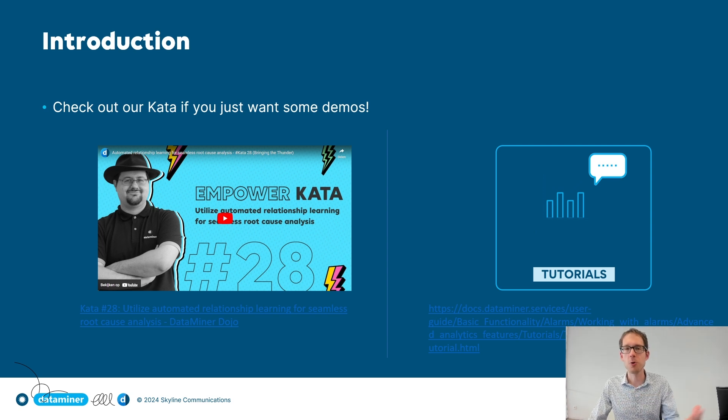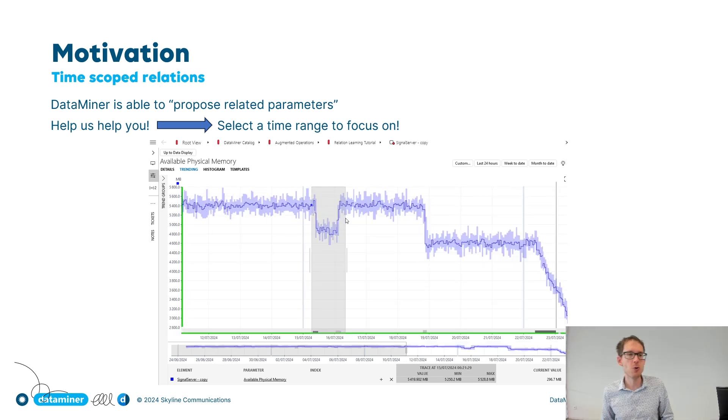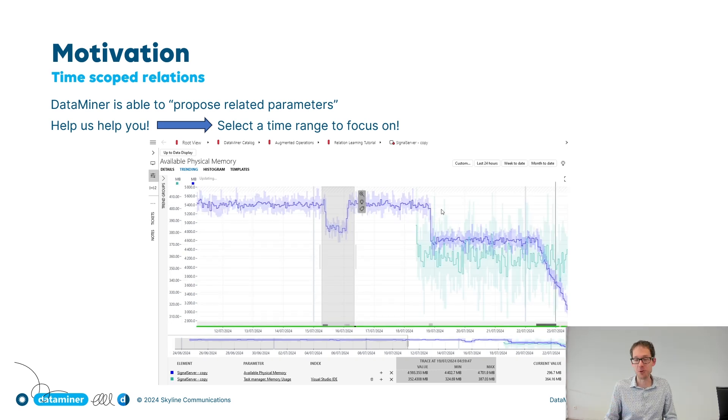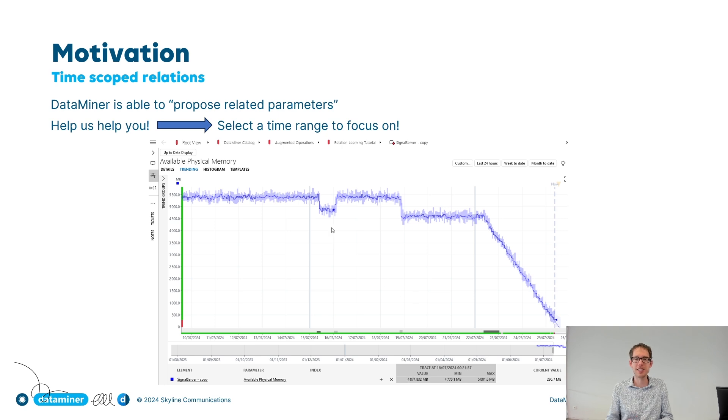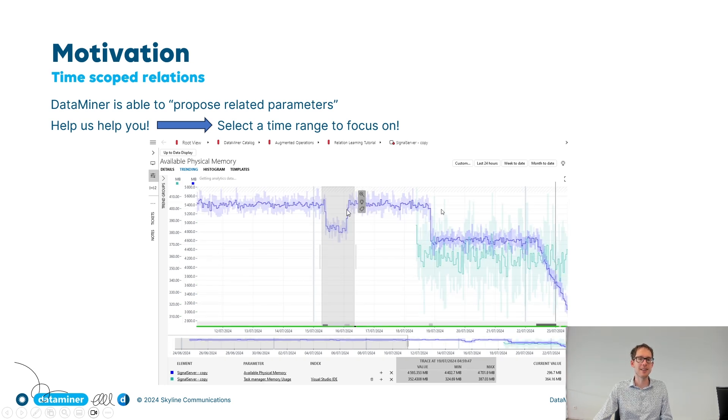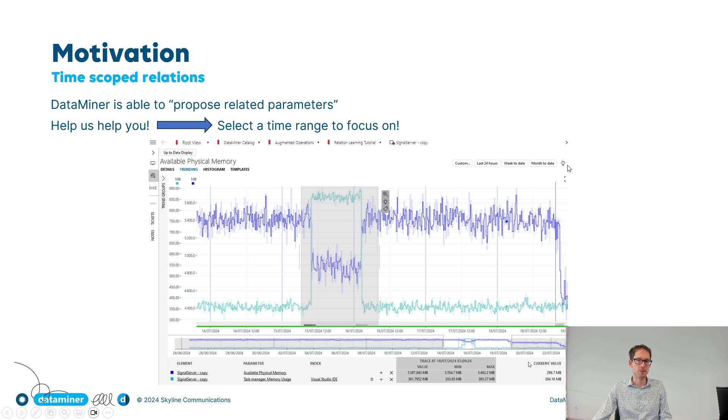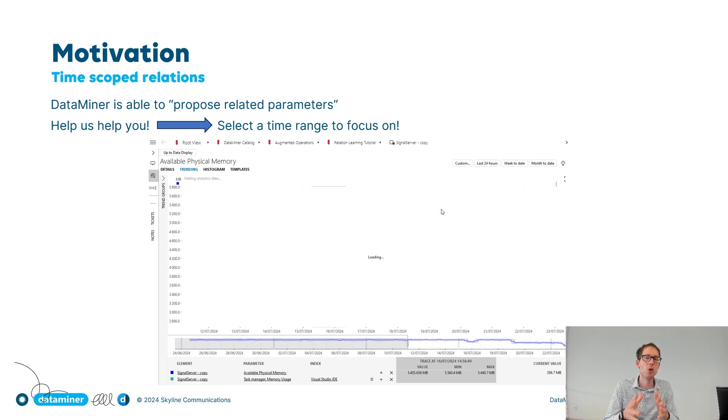What is time scoped relation learning? Well, in time scoped relation learning, the idea is that you help us help you. And how do we do that? Assume that you're looking at a parameter and you're interested in a specific part of that trend graph. Then it can be interesting if you just select that part of the trend graph and use this light bulb instead of the one on the top right.